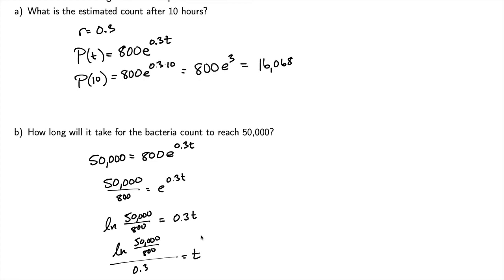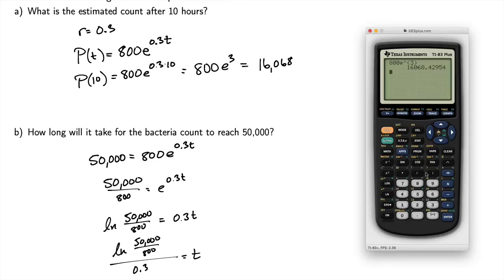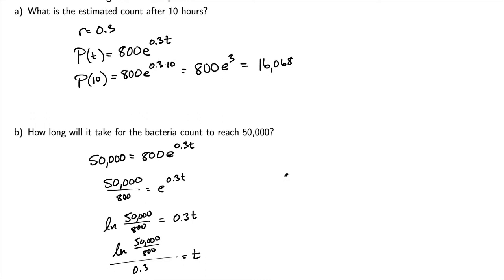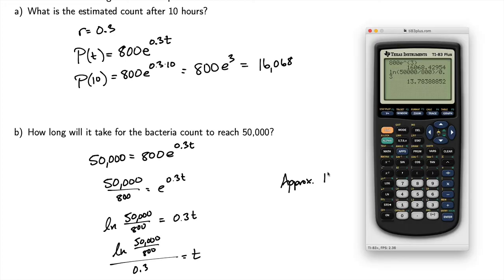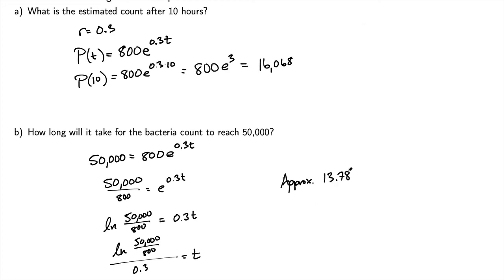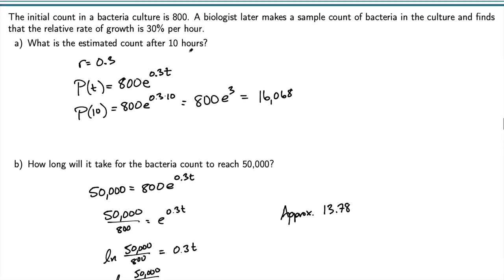Now we can plug this into our calculator: the natural log of 50,000 over 800, divided by 0.3. We can round this however we want — I'm going to round to the nearest hundredth, so t ≈ 13.78. The units are the same we were previously using for time, which is hours. So that's approximately 13.78 hours.